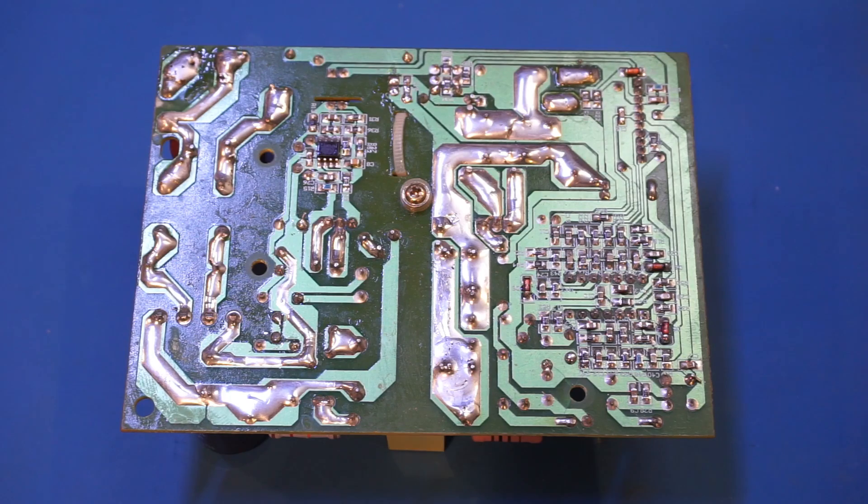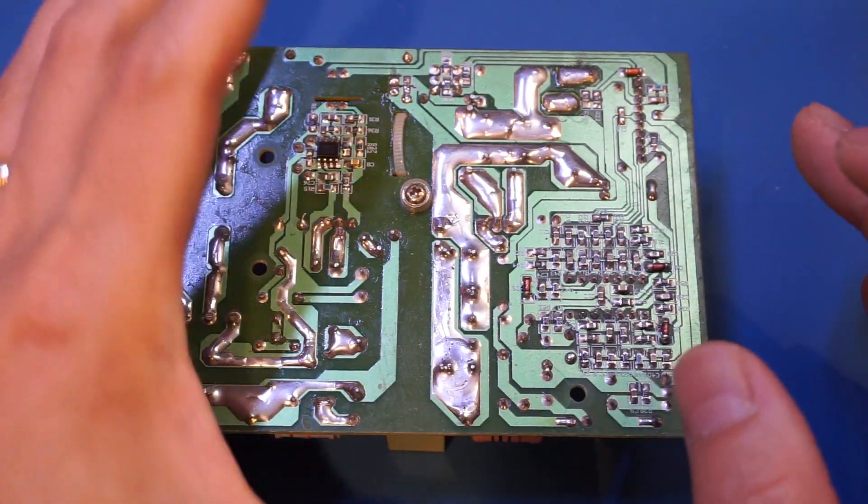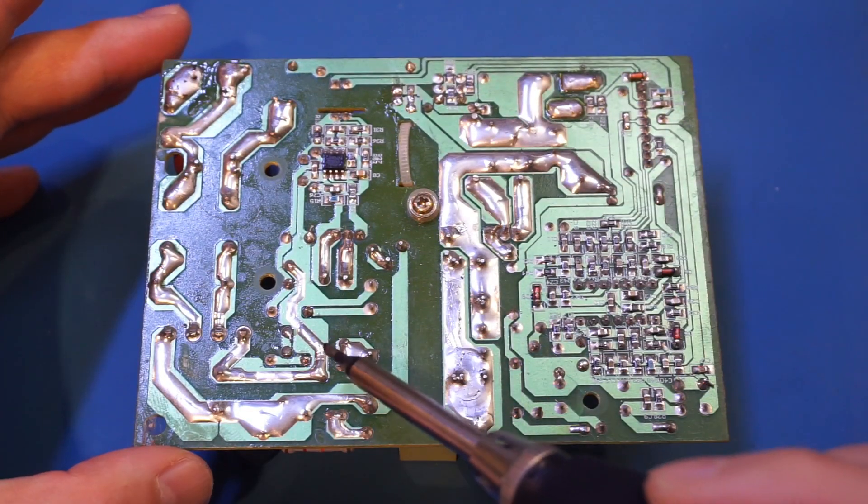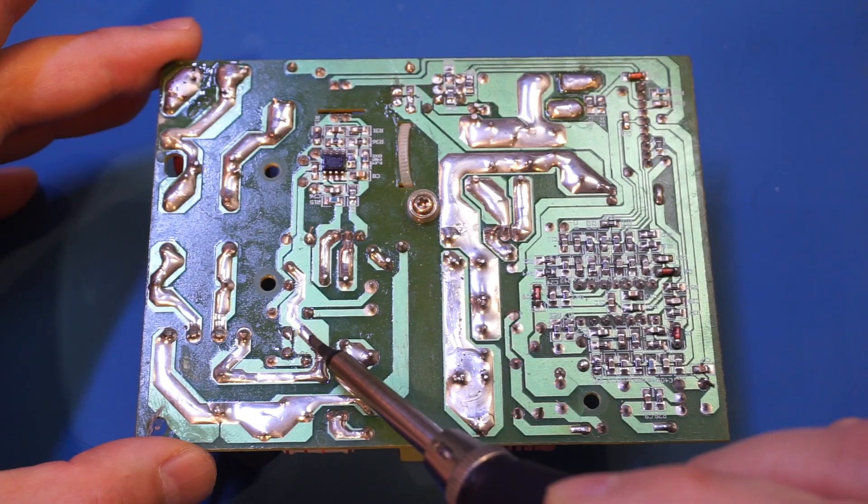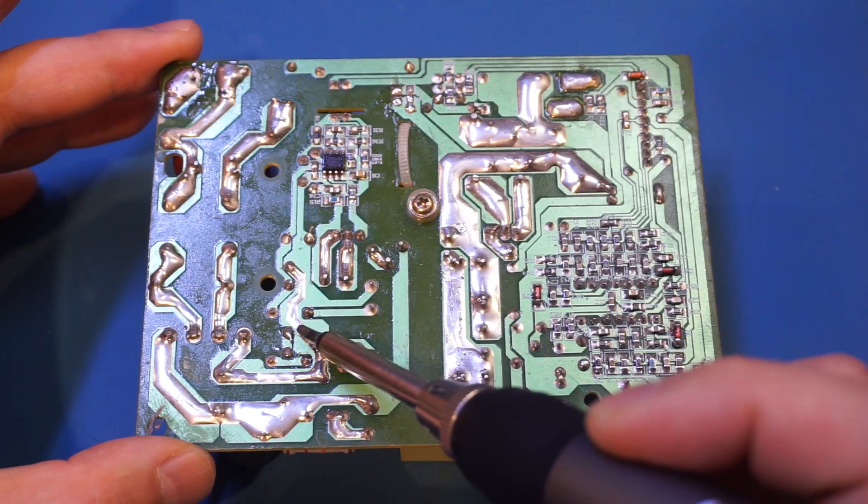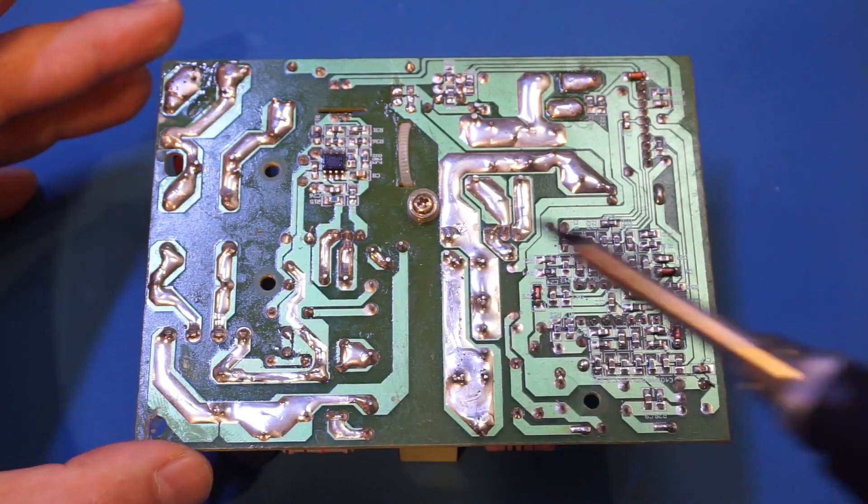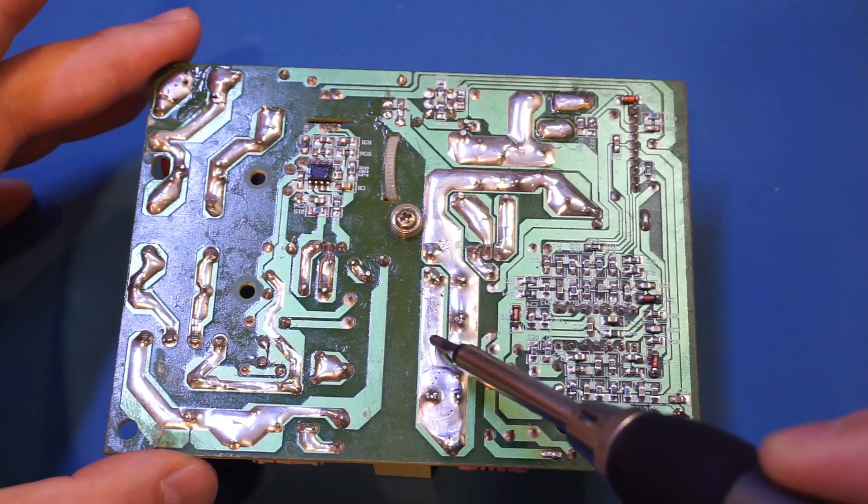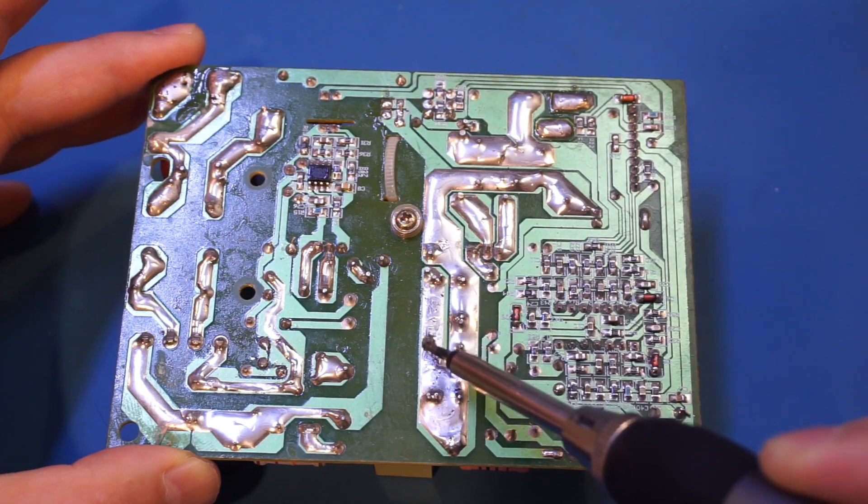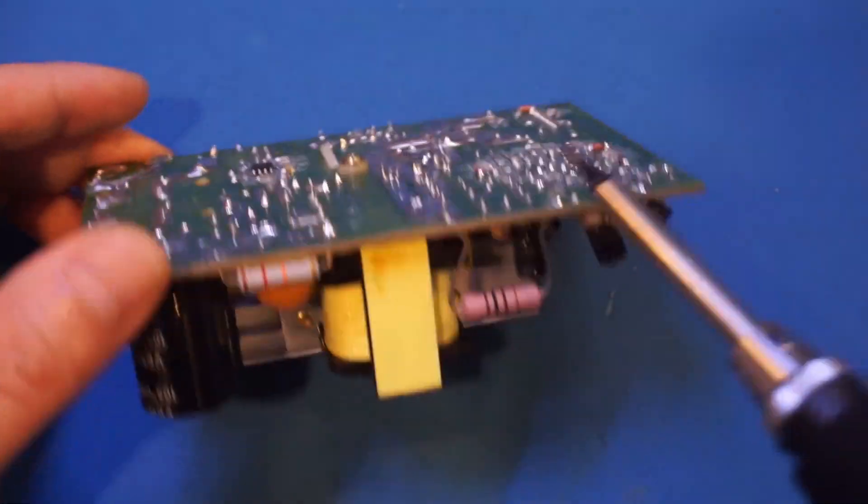Now let's see what a 65 watt iron can do. Here I have a switching power supply module - it has a lot of thick traces and large thermal mass components on the other side, so let's give it a try. Let's start with a thinner trace. Right now the temperature is set at 320, so we have no problem working on this trace here. Let's try a thicker one, let's go straight to this one. We still have no issues at all here.